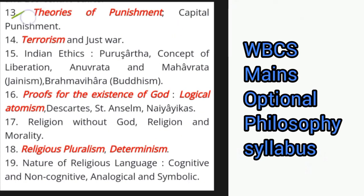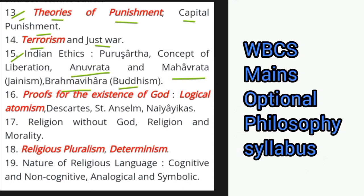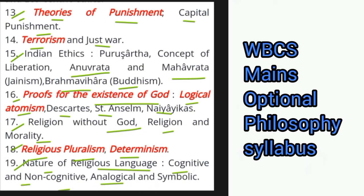Next, theories of punishment, capital punishment, terrorism and just war. Then Indian ethics — Purushartha, concept of liberation, Anuvrata and Mahavrata. Then Brahma-vihara under Buddhism. Then proofs for the existence of God — logical atomism, Descartes' theories, St. Anselm, Nyayikas, religion without God, religion and morality. Then religious pluralism, determinism. Then the nature of religious language — cognitive and non-cognitive, analogical and symbolic.